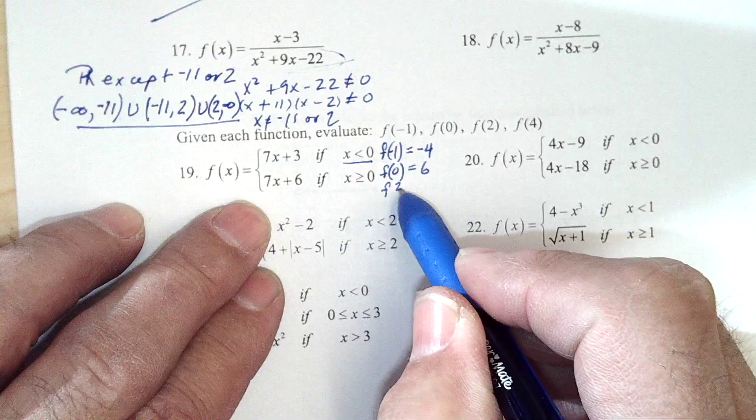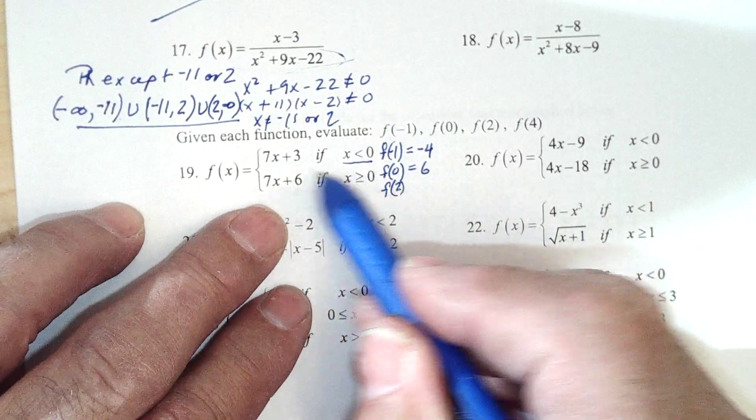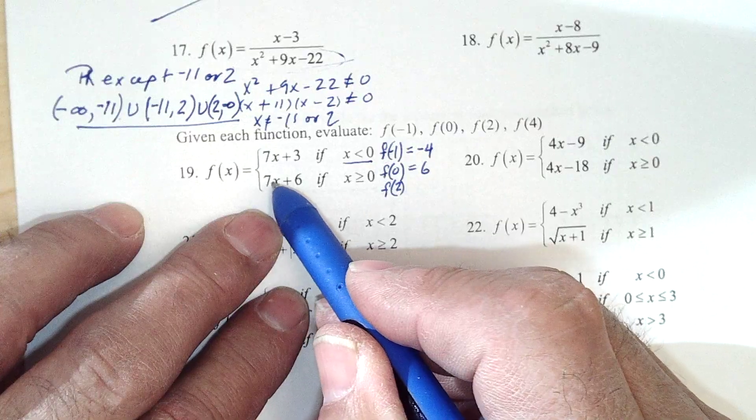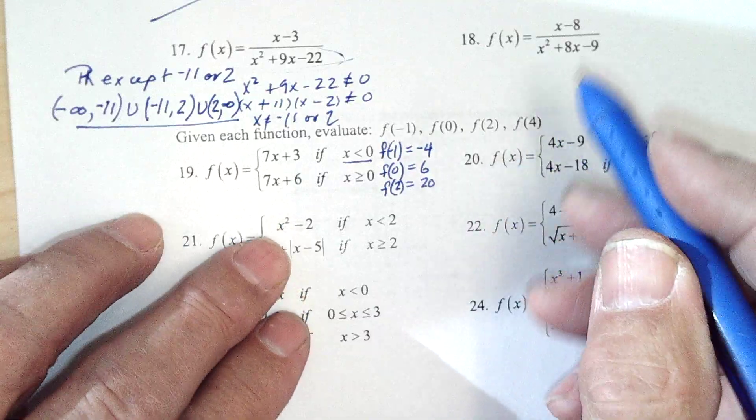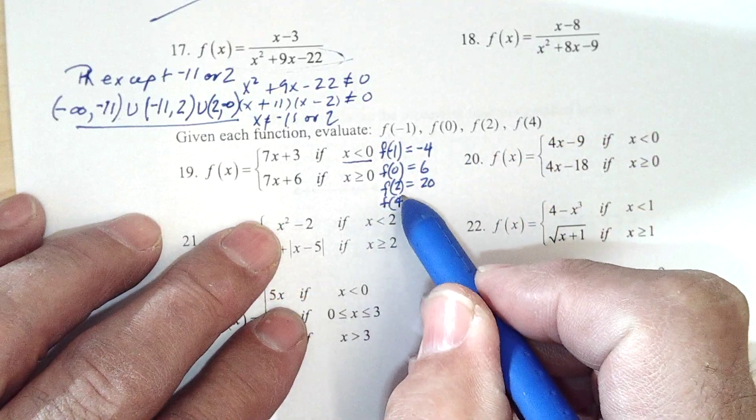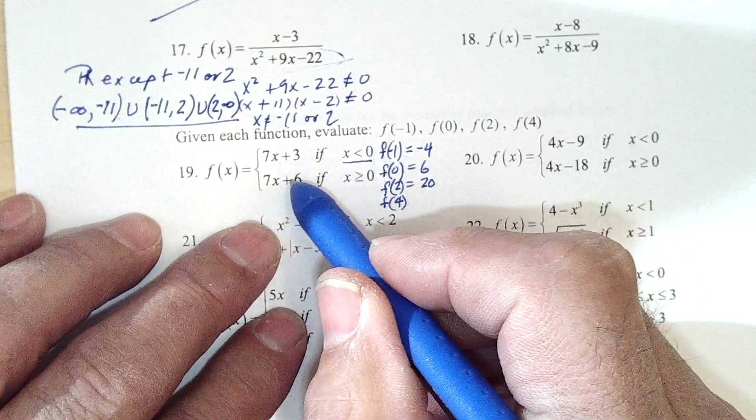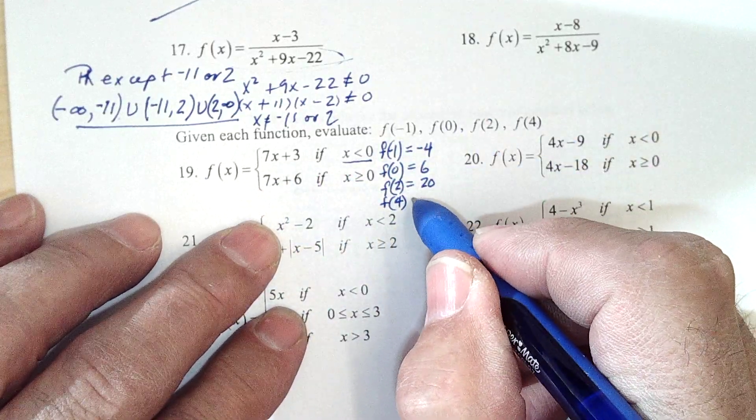f of 2, 2 is in this window, so 7 times 2 is 14 plus 6 is 20. And f of 4, 4 is in this window also, so 7 times 4 is 28 plus 6 is 34.